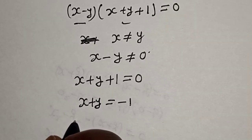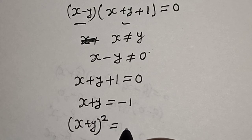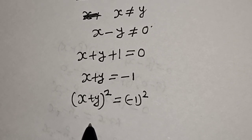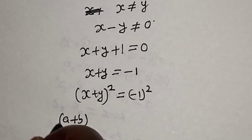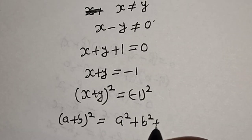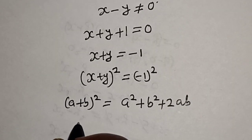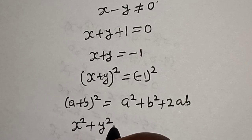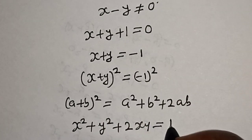Let's square both sides. So s plus y, all squared, is equal to minus 1 squared. Remember that if you have A plus B squared, this equals A square plus B square plus 2AB. Then this becomes s square plus y square plus 2sy is equal to 1.